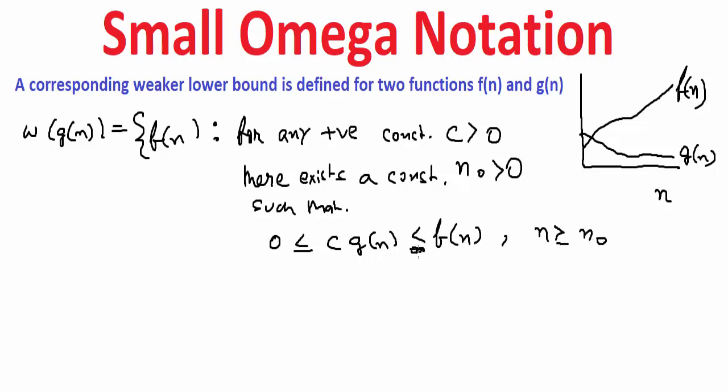This will give the lower limit. This can be shown by the help of limit n tending to infinity, g of n upon f of n, this must be equal to zero.